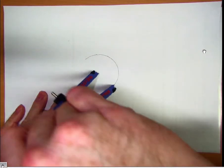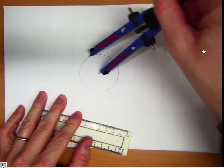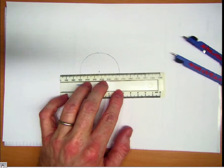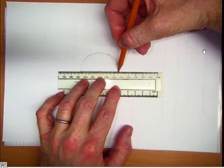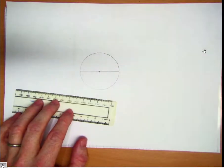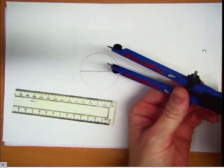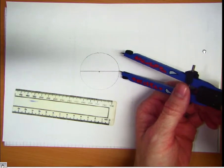So there's my circle. Then I'm going to draw a diameter, which is a line segment through the center, and then we're going to bisect this line segment for this diameter.